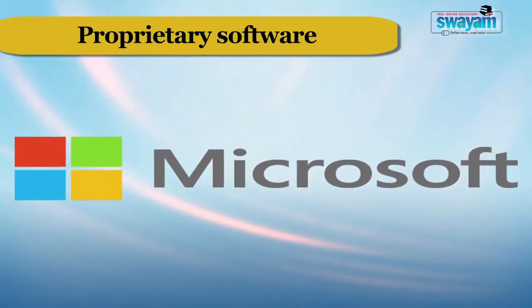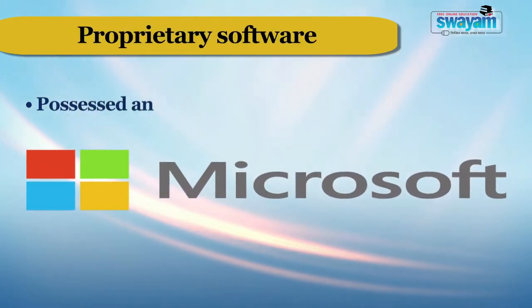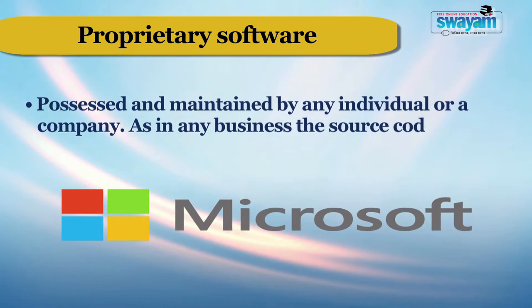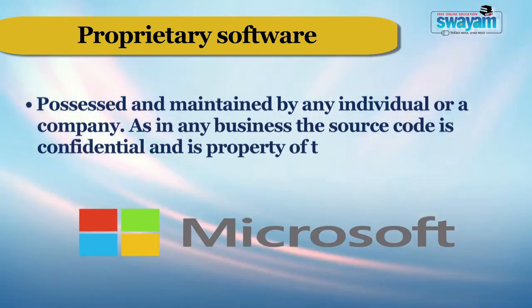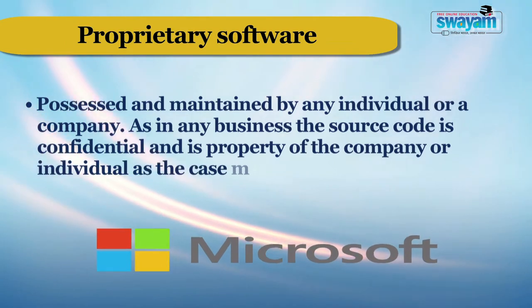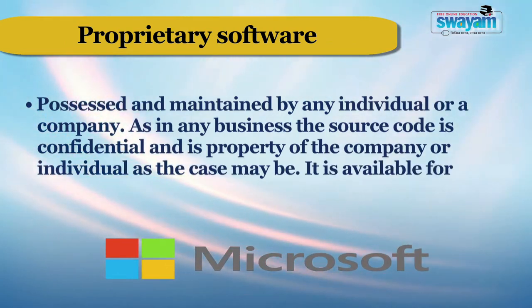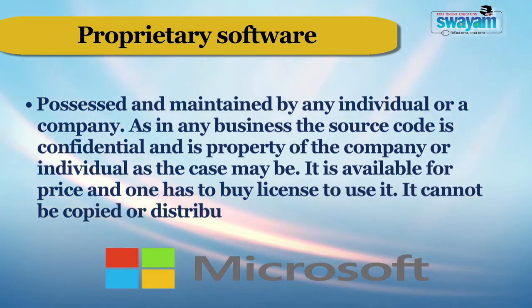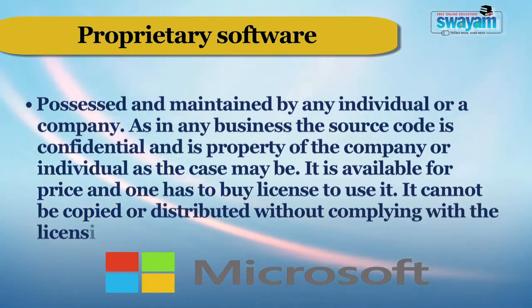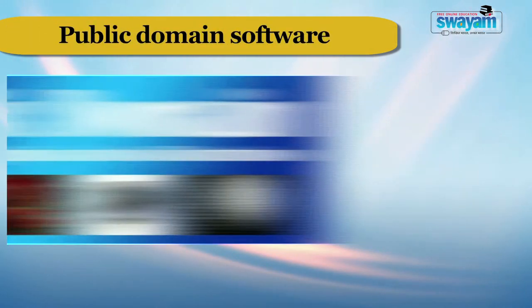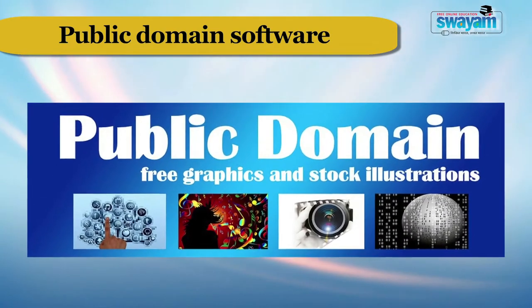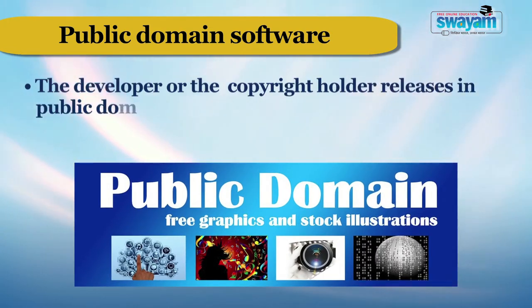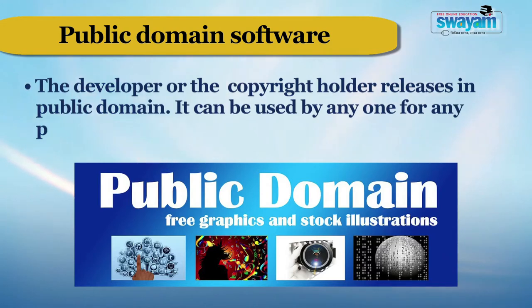Proprietary software is a group of software that is possessed and maintained by any individual or a company. The source code is confidential and is the property of the company or the individual. It is available for a price and one has to buy a license to use it. It cannot be copied or distributed without complying with the licensing agreements. There is also another category — public domain software — where the developer or the copyright holder releases it in the public domain, and it can be used by anyone for any purpose.